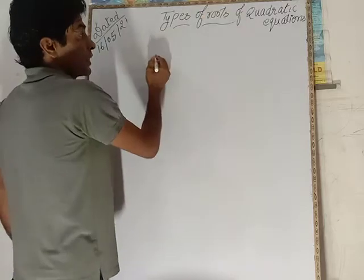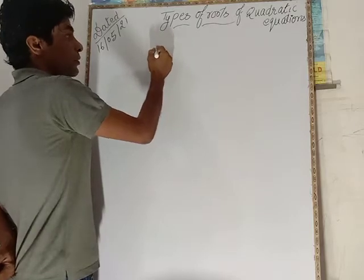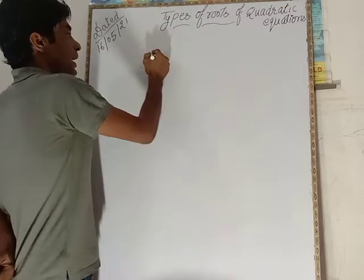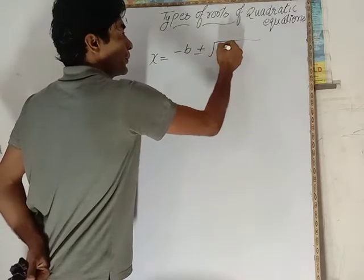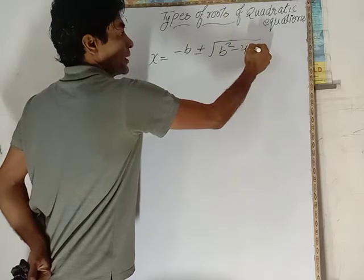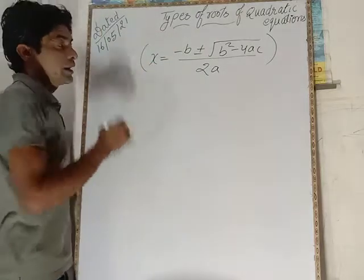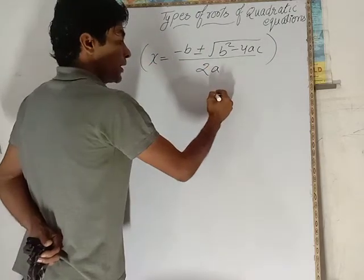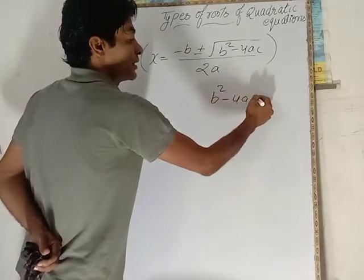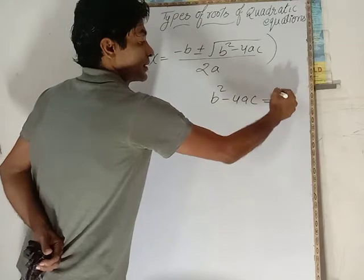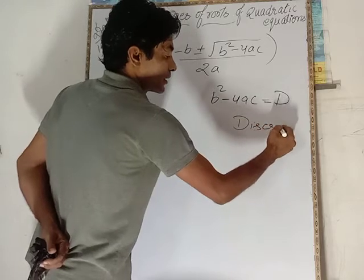Types of roots - you know very well Sridharacharya form of our quadratic equation: x equals minus b plus minus square root of b squared minus 4ac divided by 2a. In which b squared minus 4ac, that is inside the square root, is known as discriminant. This is your discriminant.